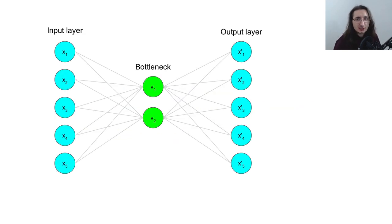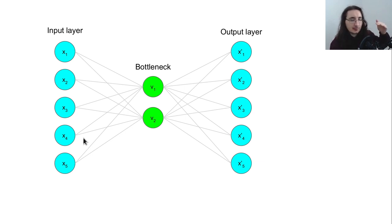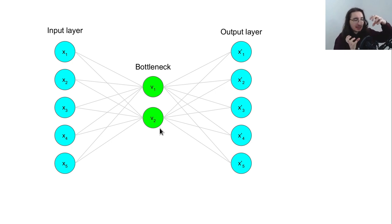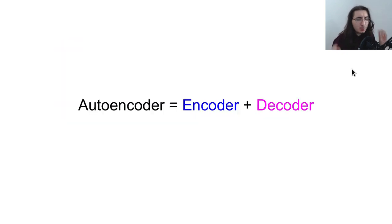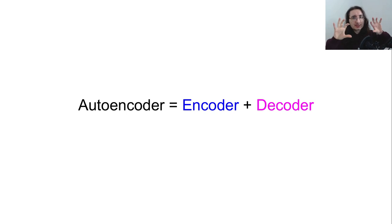Let's take a look at a visualization of an autoencoder. On the left-hand side we have an input layer where we feed in some data. At the center we have this bottleneck, which has a lower dimensionality compared to the input layer. Then we have the output layer, which once again has the same dimension as the input layer. An important thing to understand is that this is a complex network architecture that relies on two separate pieces.